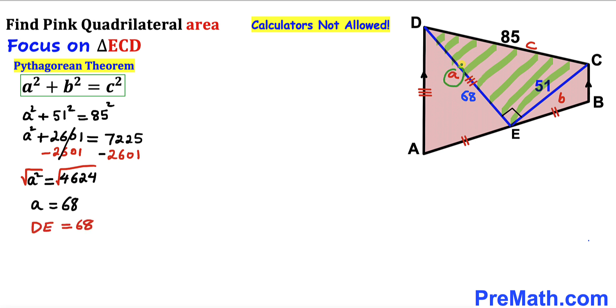Let's undo this square by taking a square root on both sides. So therefore a turns out to be 68. And since a represents this side length DE, our DE length is 68.